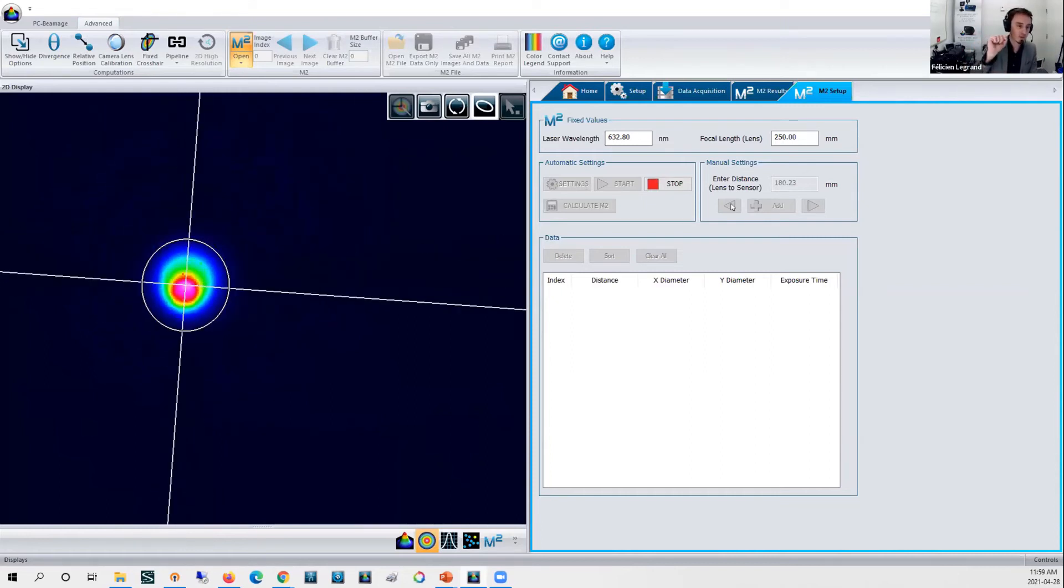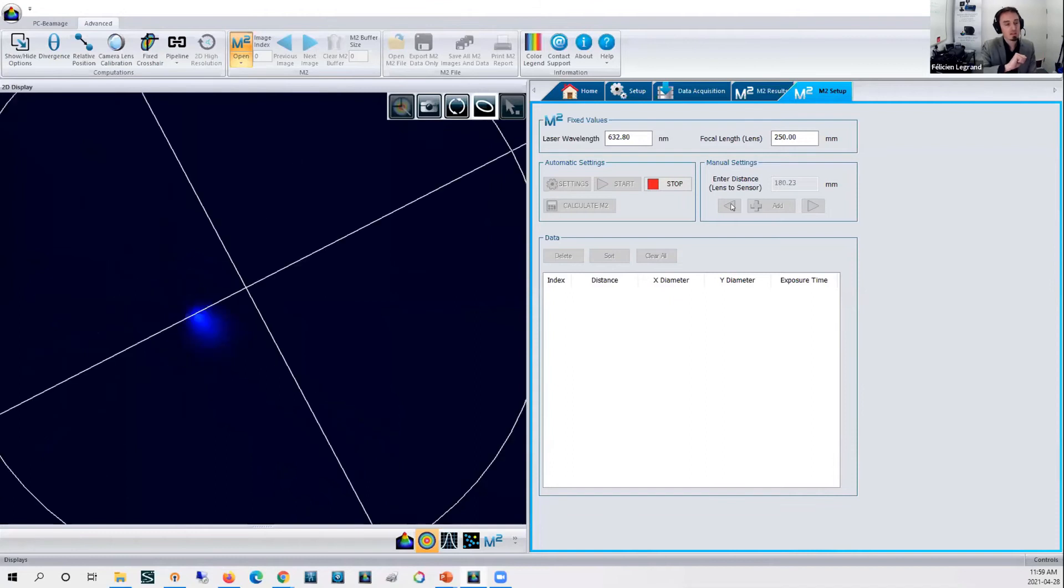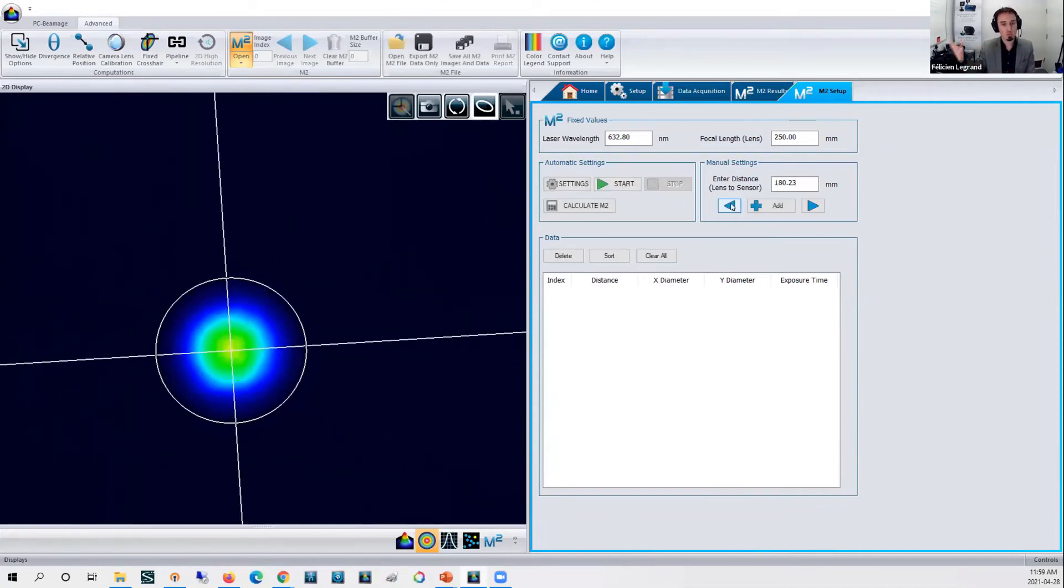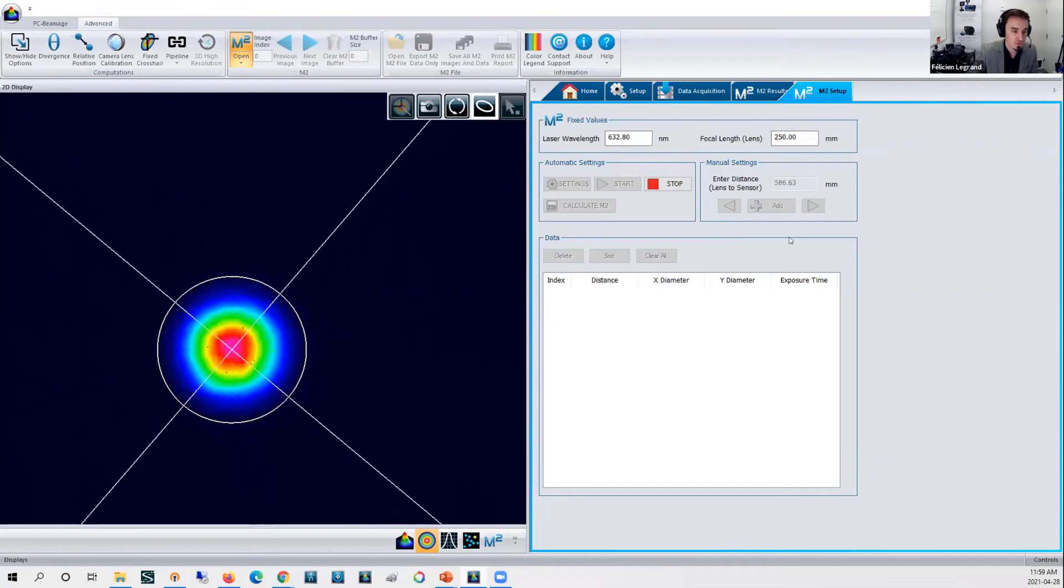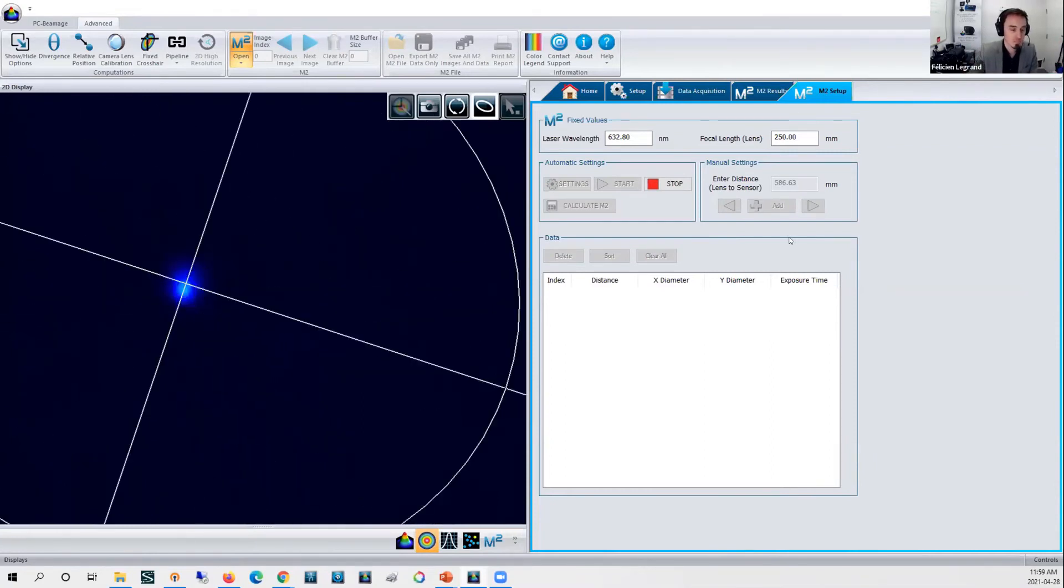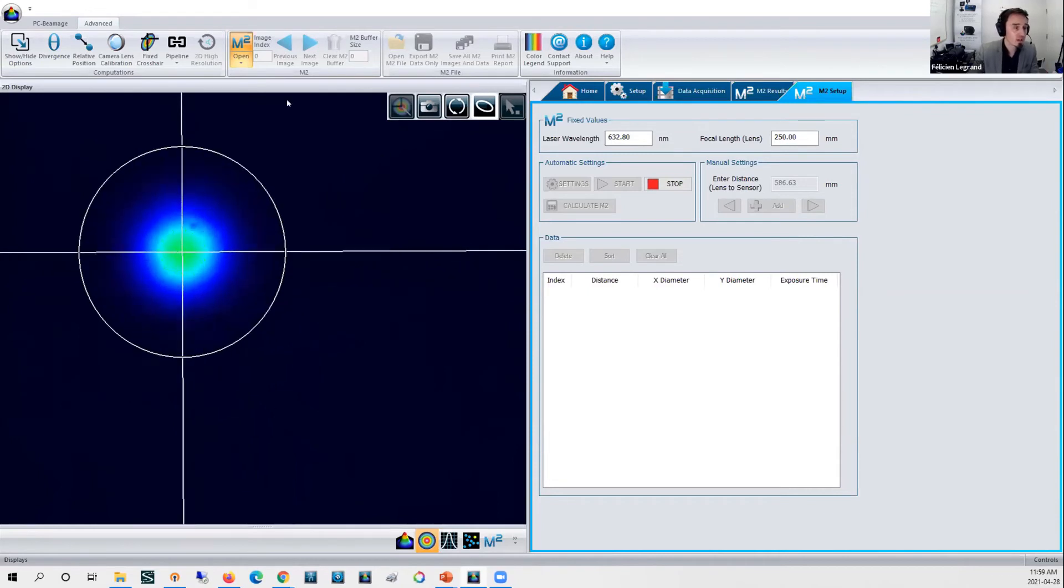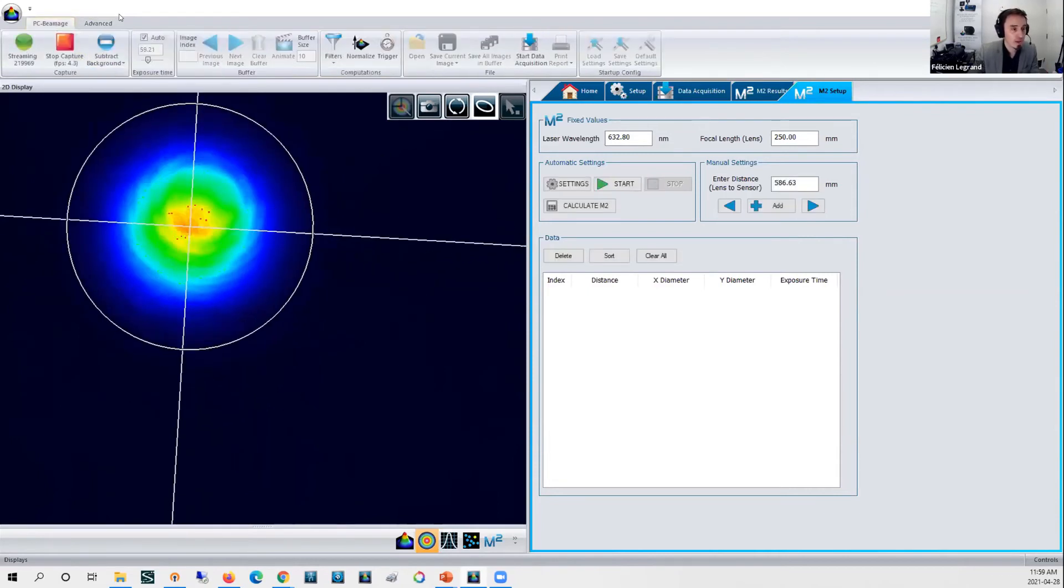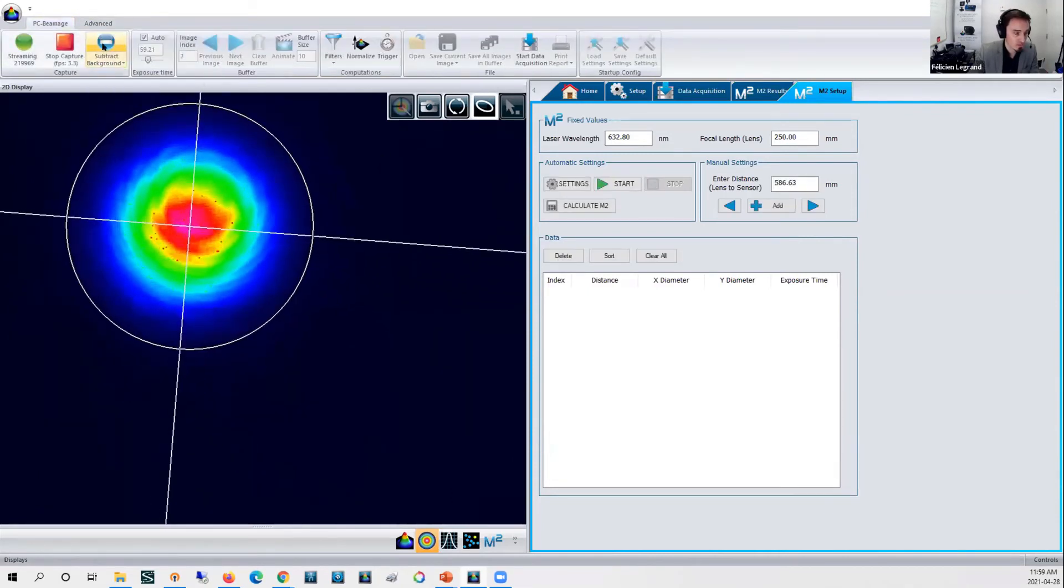Yeah, my laser beam stays within the course of the moving stage, no problem. It's within my region of interest. Then what I'm going to do is perform a background subtraction with this button here.